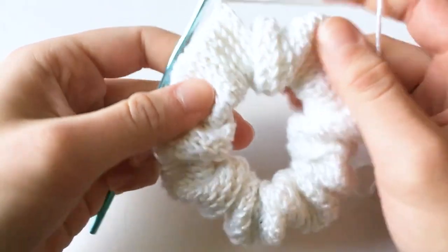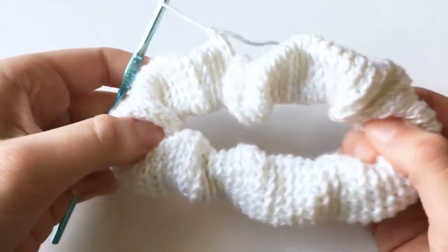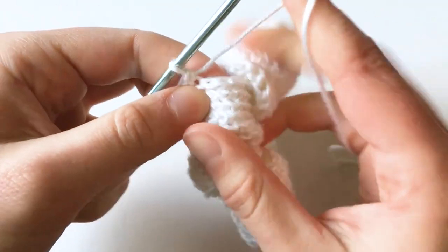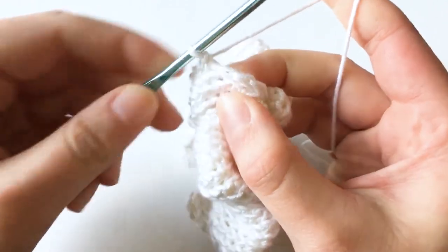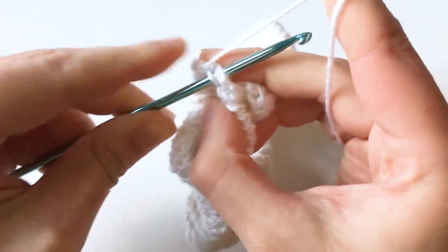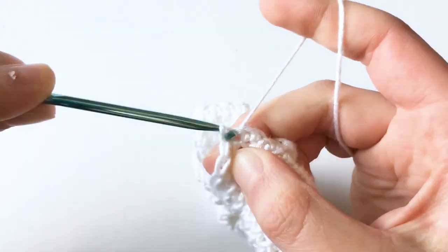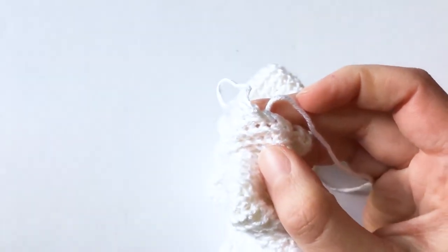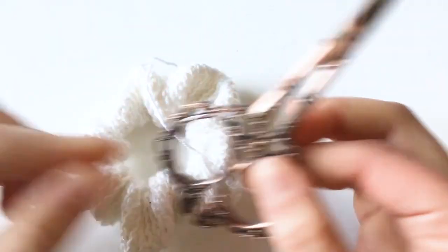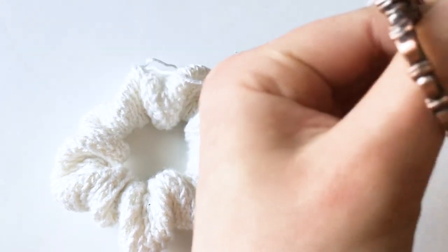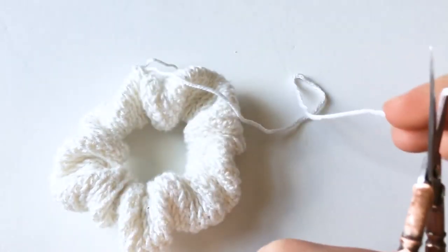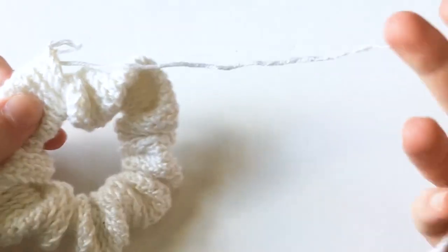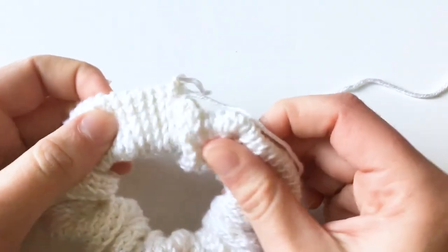This is after about 85 rounds. To finish off the scrunchie make a slip stitch. Then you can cut your yarn and you want to leave about a 12 inch tail for sewing the two ends together.